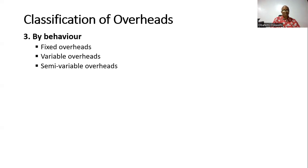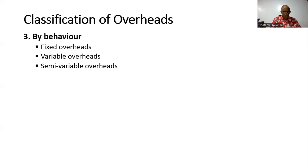When we talk about fixed overhead, we are talking about overheads that do not change over time based on the level of production or units being produced. Fixed overheads are those costs which do not vary when we change the volume of production relating to a particular level. Whereas variable overheads are those that change based on the level of units produced. Variable overheads are those costs which vary in direct proportion to the volume of production.